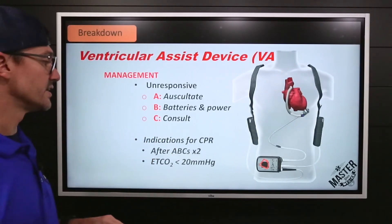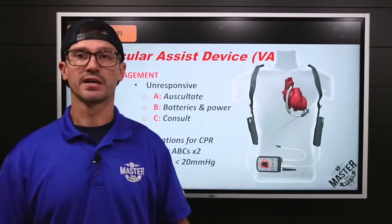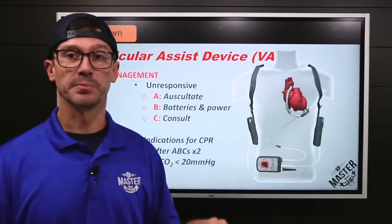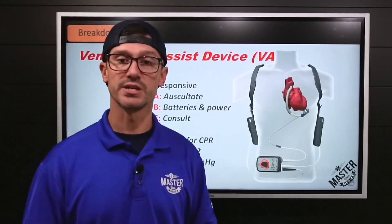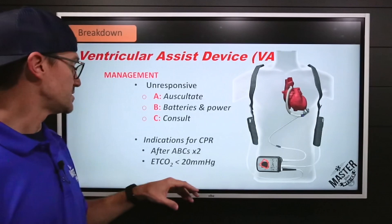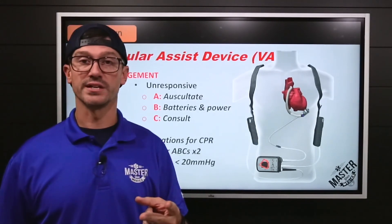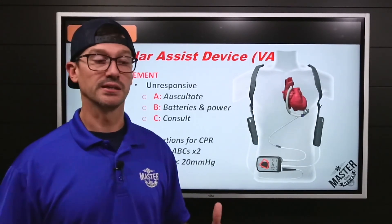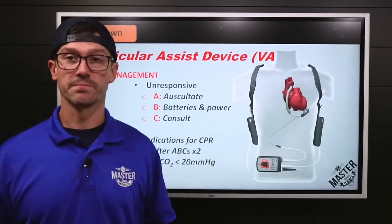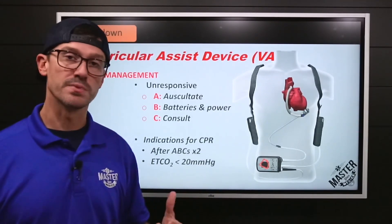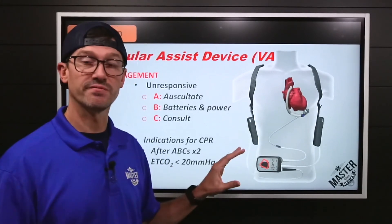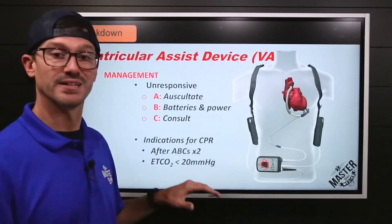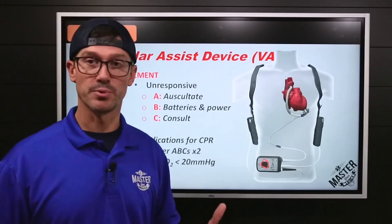When it comes to indications to actually begin chest compressions — we're accustomed to starting compressions on pulseless patients, but those other steps must come first. After ABCs times two, if the VAD has failed and nothing is working and consultation isn't helping, then we can begin CPR. Or if end-tidal CO2 is less than 20 — even if the VAD is still running, if EtCO2 is below 20, it is failing, so begin compressions, because an end-tidal of 20 indicates critical hypoperfusion.